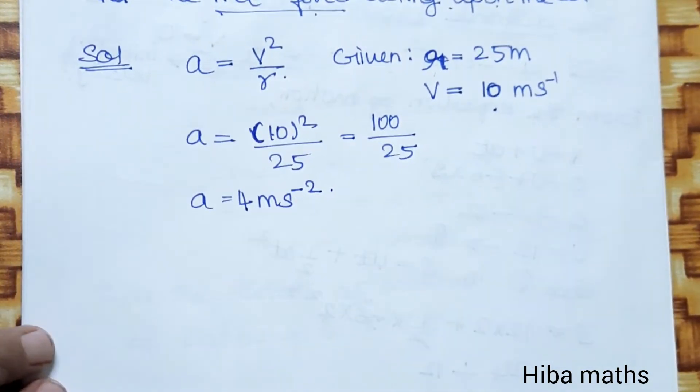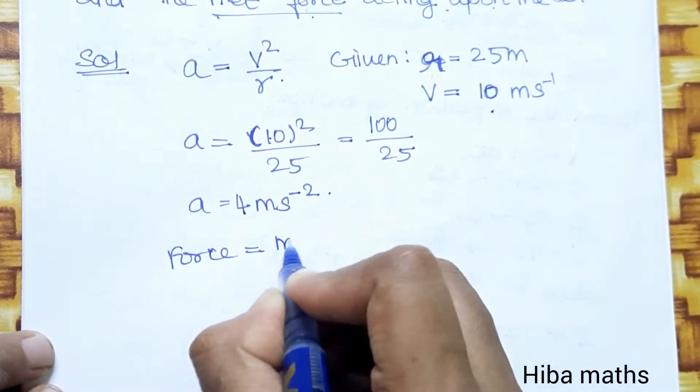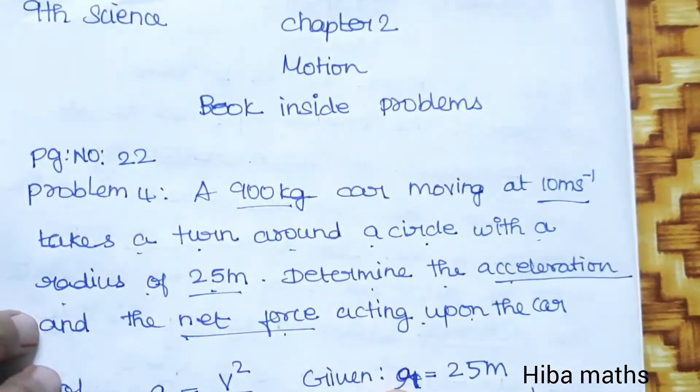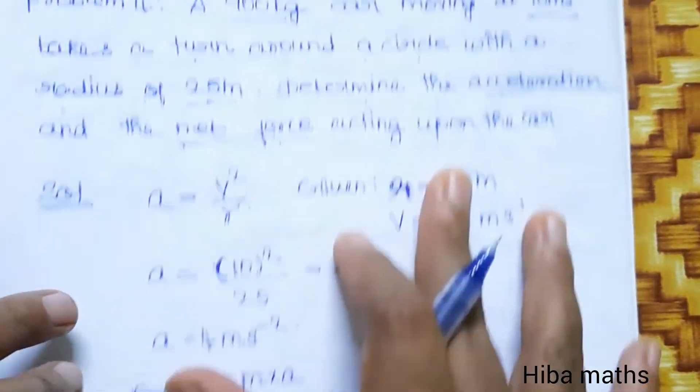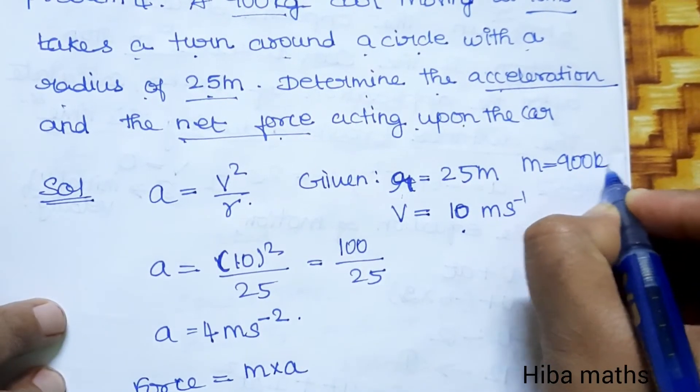Now we need to find the net force. The net force formula is mass into acceleration. Mass in the problem is 900 kg. m is equal to 900 kg.